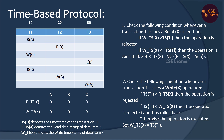First, Transaction 1 executes read of A. We check the condition: is the write timestamp of A greater than the timestamp of the transaction? The write timestamp of A is 0, and the transaction timestamp is 10. So 0 greater than 10 is false — this condition is false.